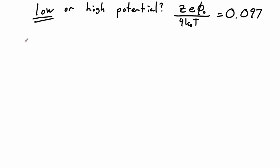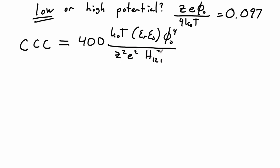As soon as we know that, we can jump into the shortened version of the equation. We said that this was going to be, in the low potential case, 400 times kT, our dielectrics, the surface potential to the fourth, divided by z squared, e squared, and the Hamacher constant squared. Let's go ahead and plug in those numbers.